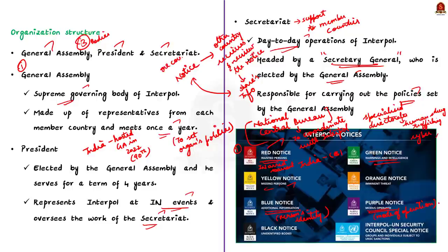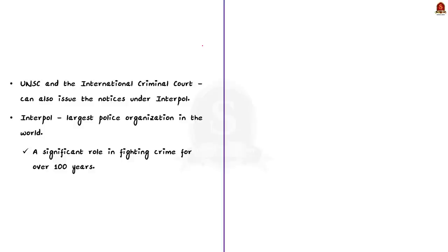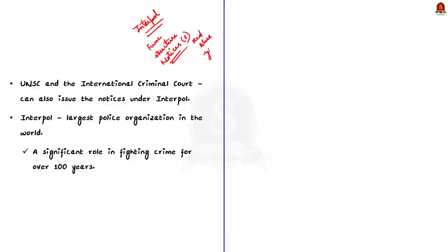In conclusion, Interpol is the largest police organization in the world, helping to catch criminals, recover stolen property, and prevent crime. It has played a significant role in fighting crime for over 100 years. In this discussion we covered the formation, functions, organizational structure, and working of Interpol, including the five types of notices: red, blue, green, yellow, and purple.